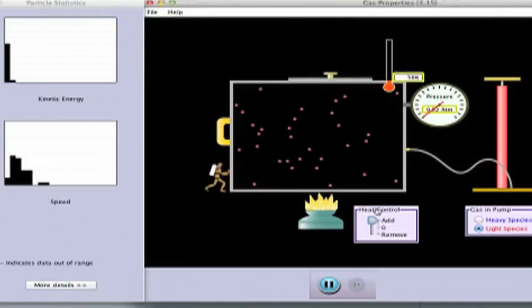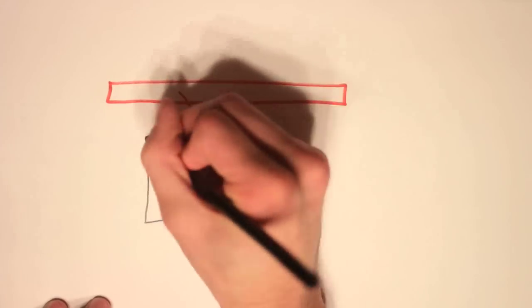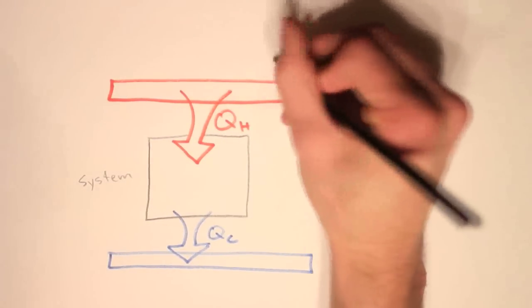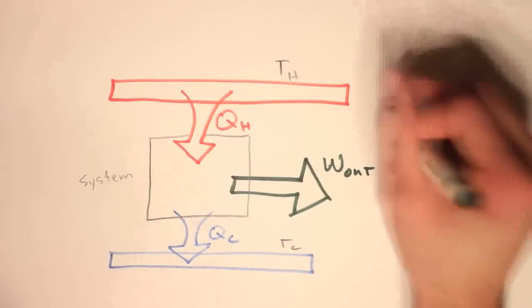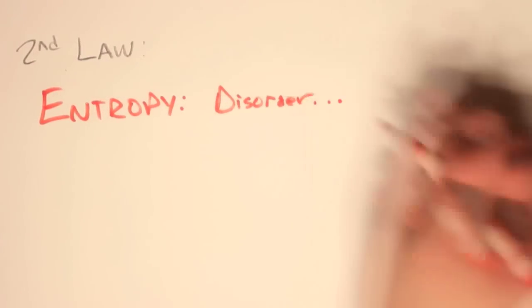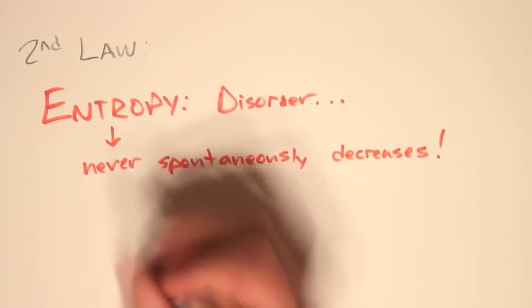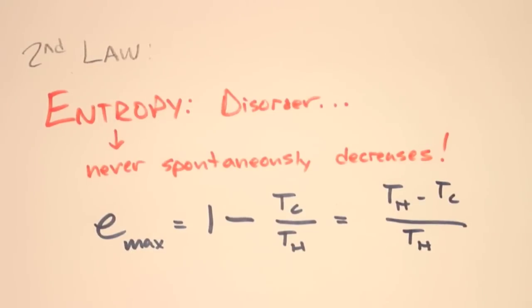We can use the spontaneous flow of heat in heat pumps. Say I have a hot reservoir putting heat qh into a system, and a cold reservoir receiving heat qc. Each reservoir has a temperature Th and Tc. I can get work out of the system — in order to not violate the first law, qc equals qh minus w_out. The second law of thermodynamics deals with entropy, and it gives us a nice equation for the maximum efficiency of an engine. Entropy never spontaneously decreases — it only remains the same or increases. Because of this, our maximum efficiency is given as one minus Tc over Th.